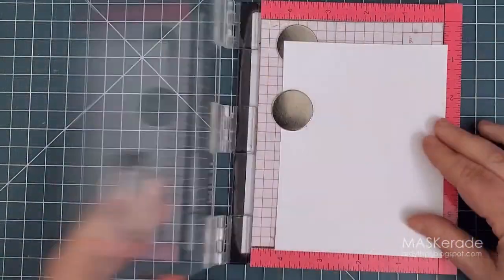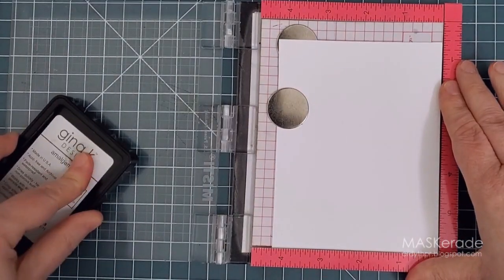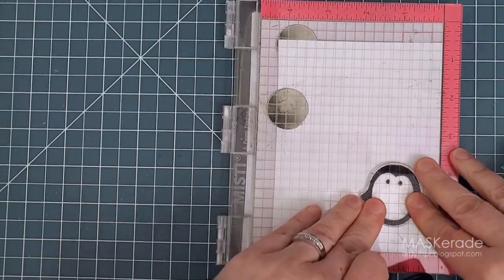Then I stamped one of the penguins. This time I used Gina K ink to stamp the black just because it dries a little bit faster than that Versafine ink.